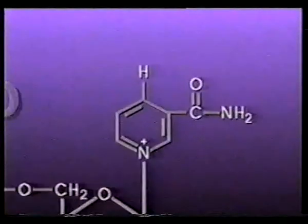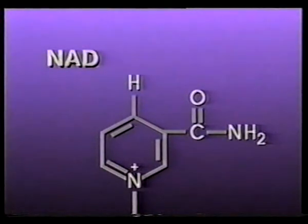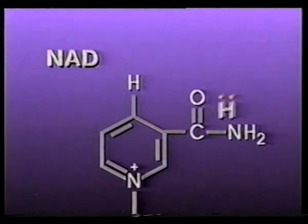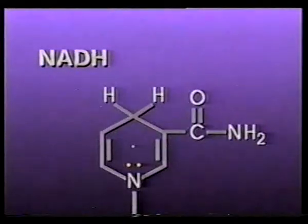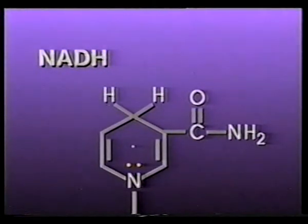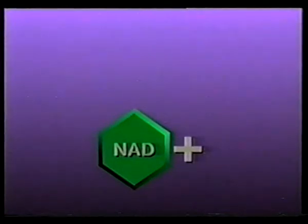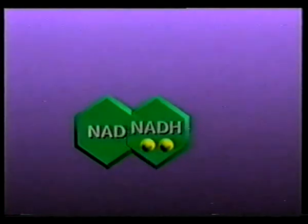Here, within this carbon ring, the positive charge represents an area of electron deficiency and drives NAD to snap up a pair of energetic electrons together with a hydrogen ion. In this form, the energized NAD molecule is called NADH. For simplicity, we'll represent the electron-deficient NAD as NAD+, and the electron-rich NAD as NADH.